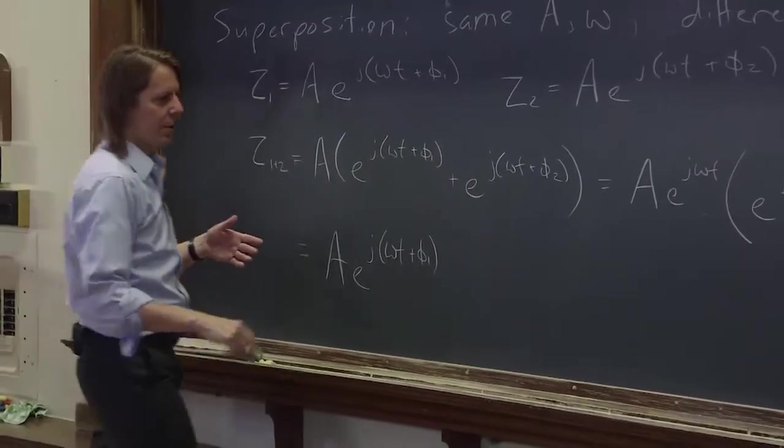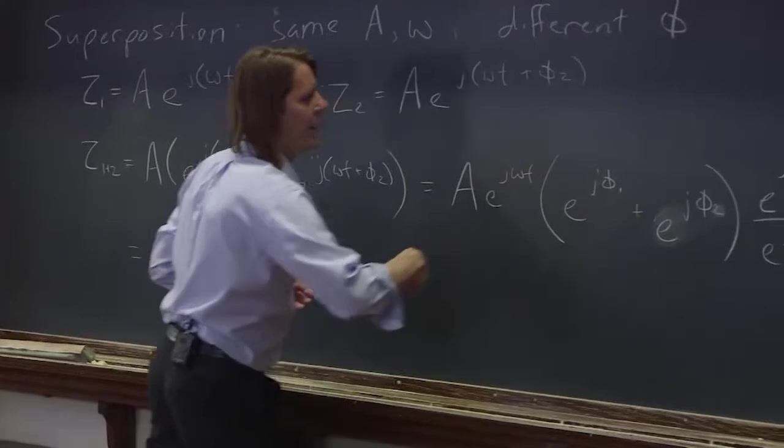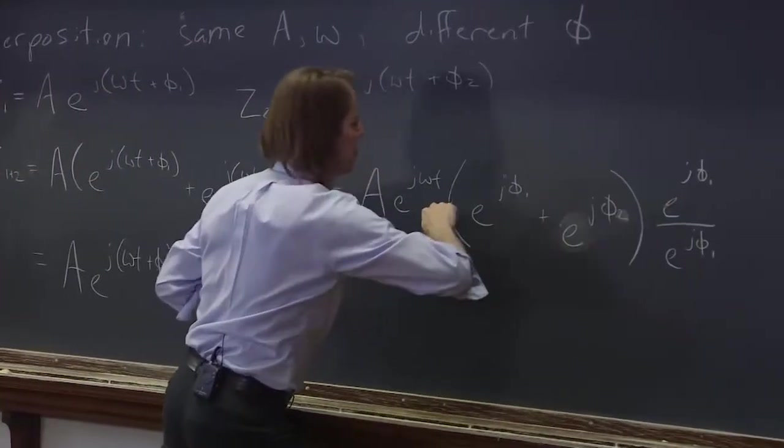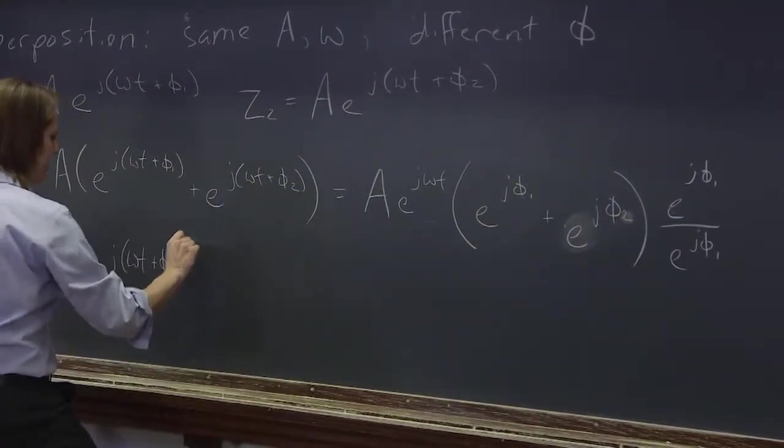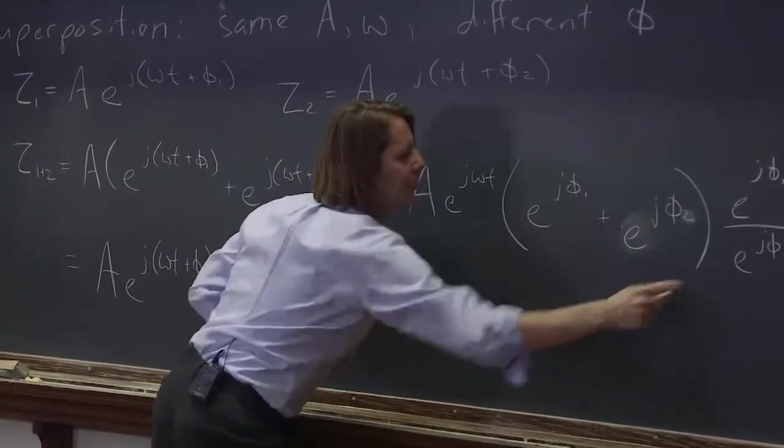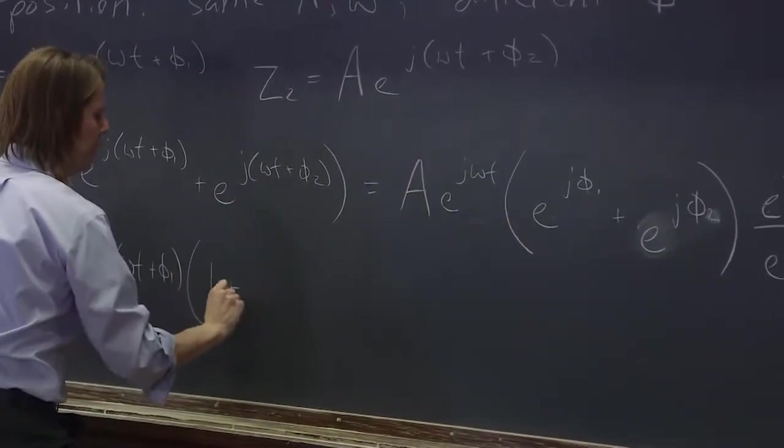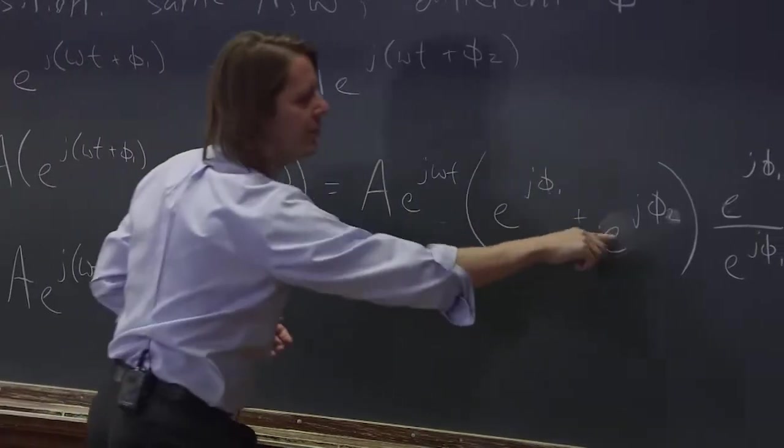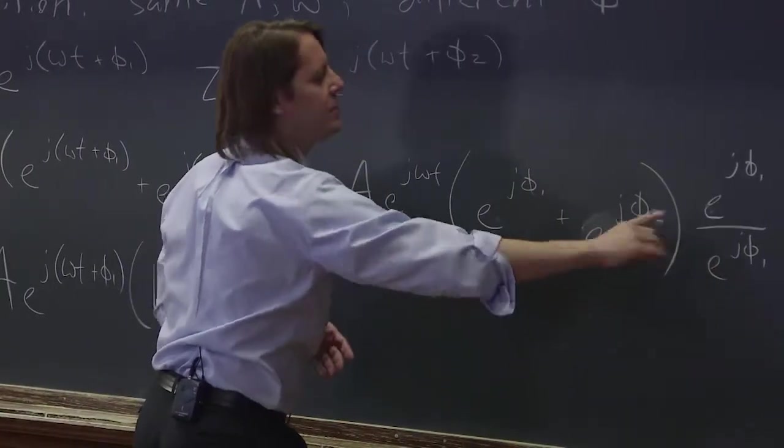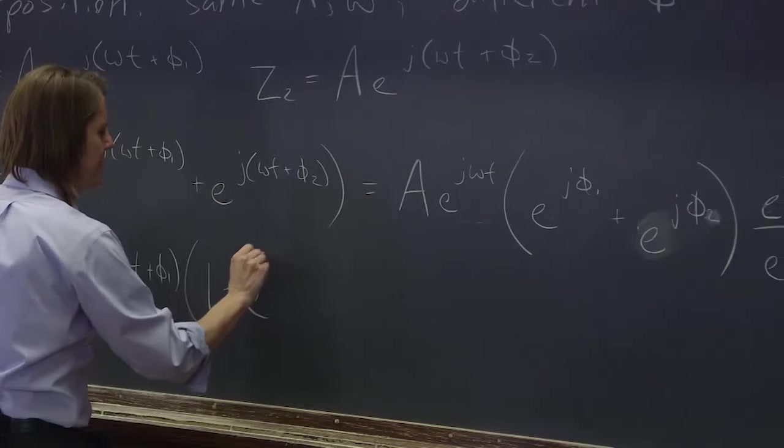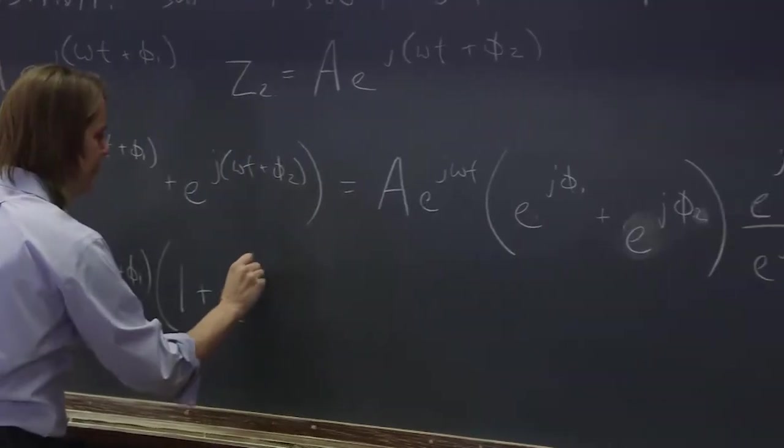We just factored one out. So this one is going over here. And then this one is going to divide through and give you this factor that looks like this. This one and that one cancel. So 1 plus e. And then you have this one over this one. That means you subtract the exponents. So 1 plus e^(j(φ2-φ1)).